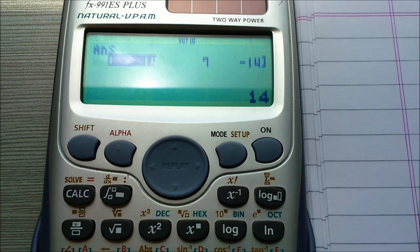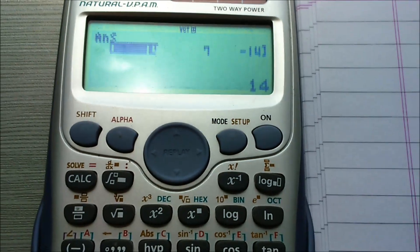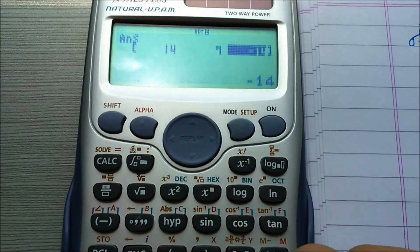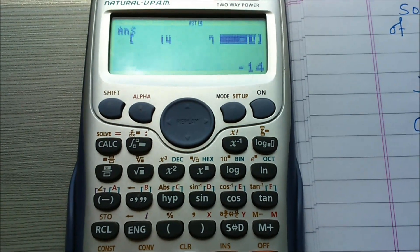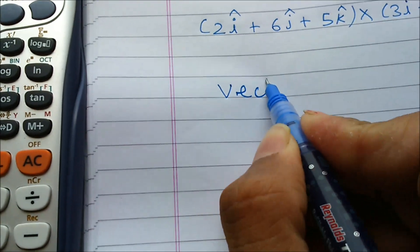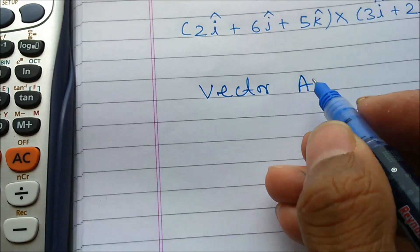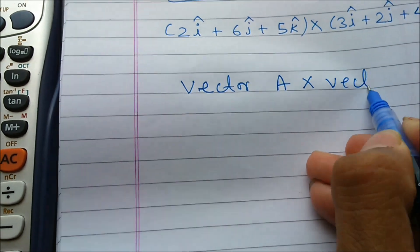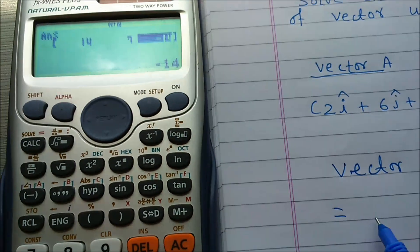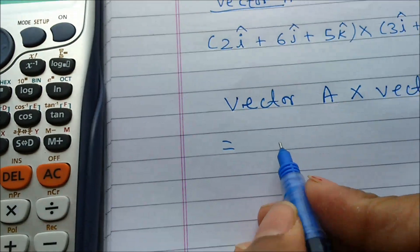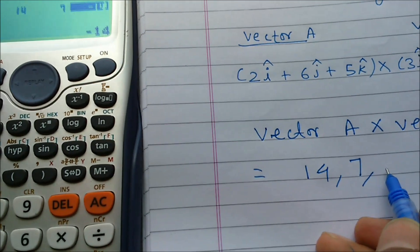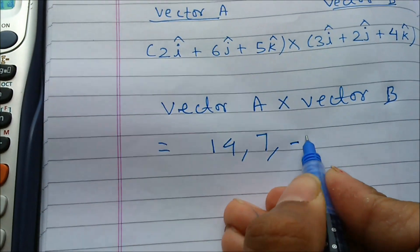The answer is: vector A cross B equals 14, 7, and minus 14.